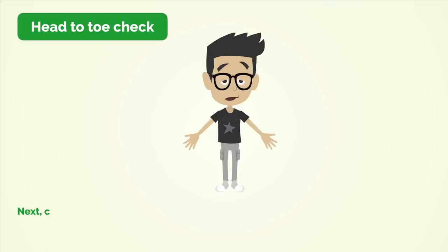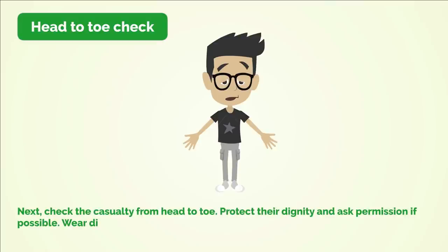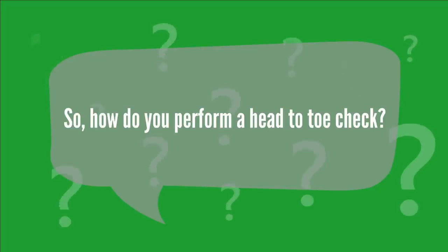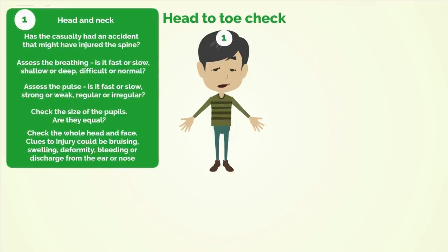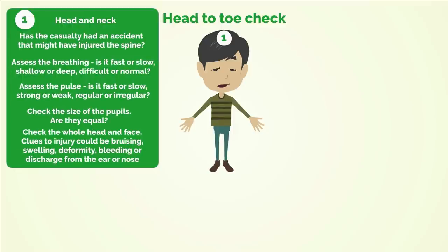Head to toe check: check the casualty from head to toe, protect their dignity and ask permission if possible, wear disposable gloves, and don't move them more than necessary. Number 1 — Head and neck: has the casualty had an accident that might have injured the spine? Assess the breathing — is it fast or slow, shallow or deep, difficult or normal? Assess the pulse — is it fast or slow, strong or weak, regular or irregular? Check the size of the pupils — are they equal? Check the whole head and face — clues to injury could be bruising, swelling, deformity, bleeding, or discharge from the ear or nose.